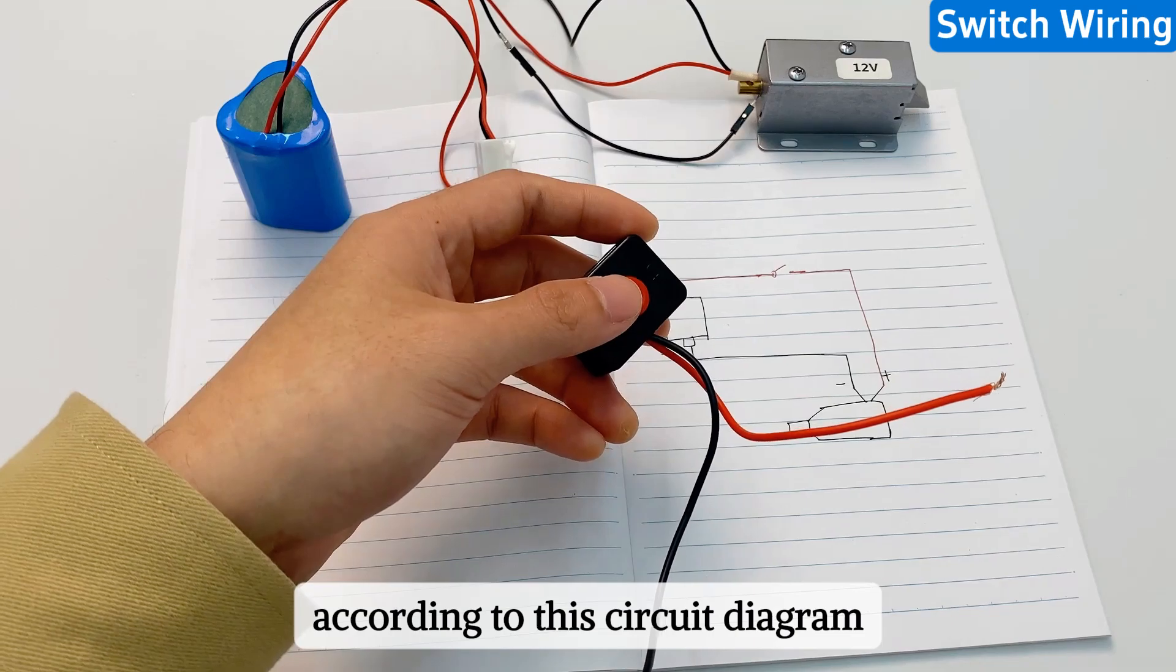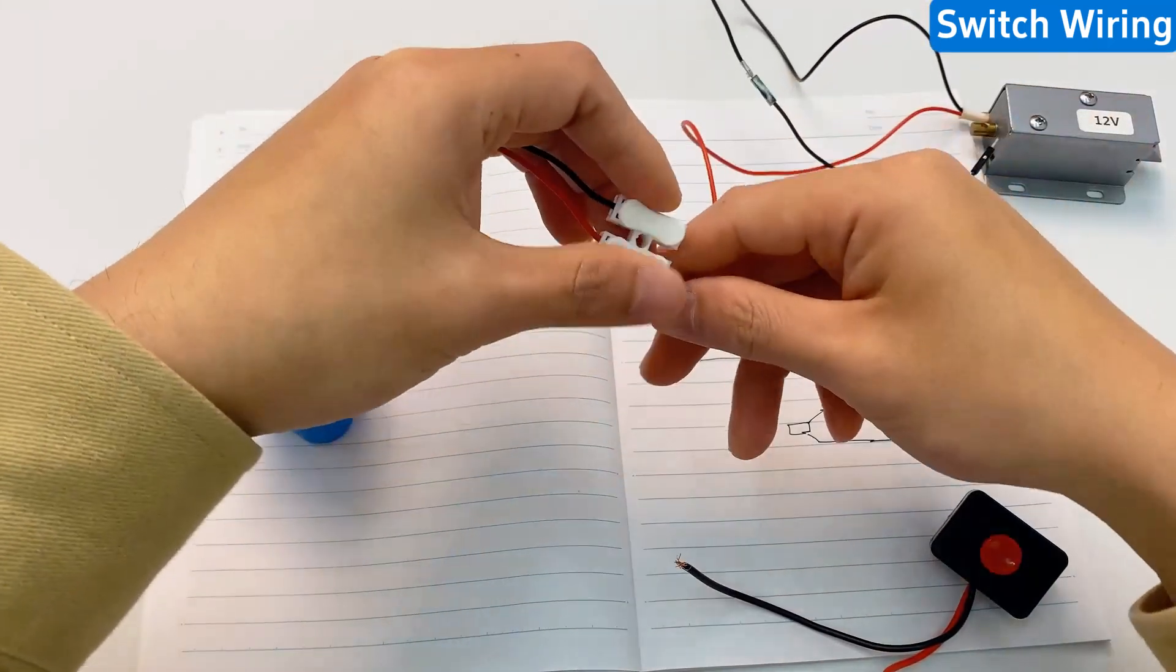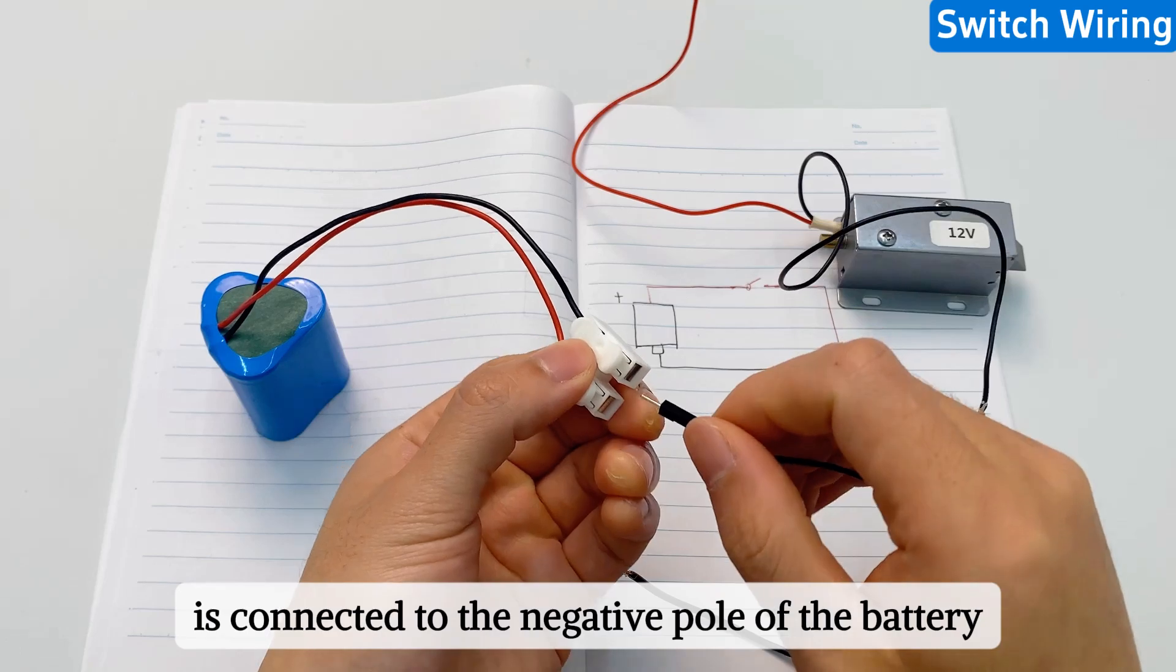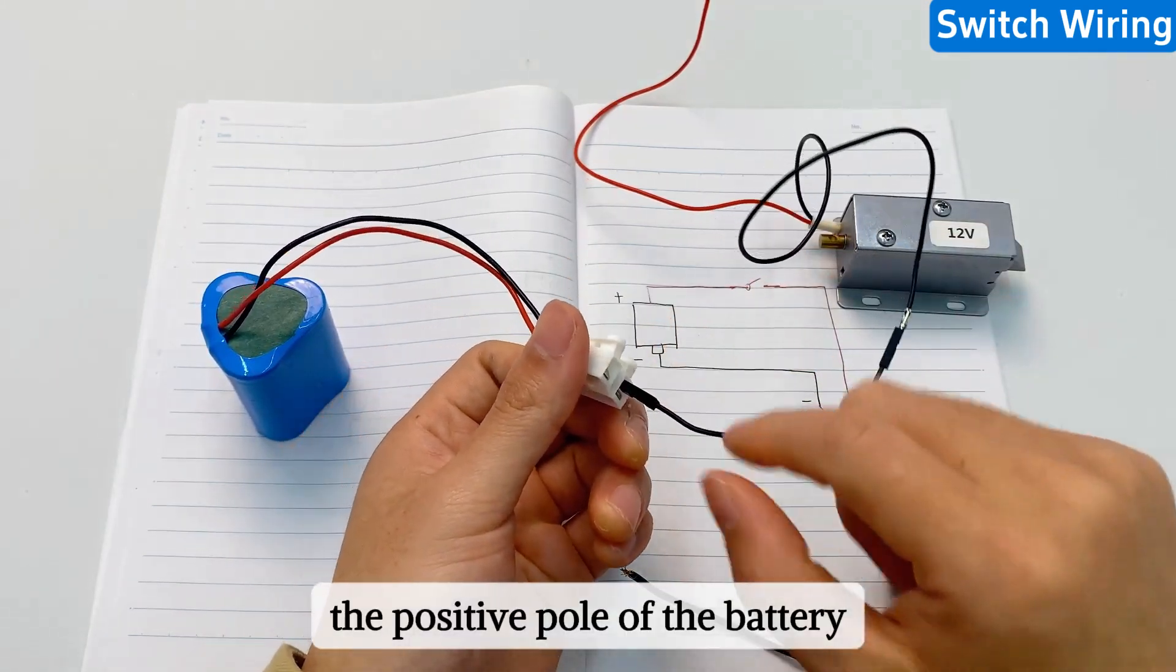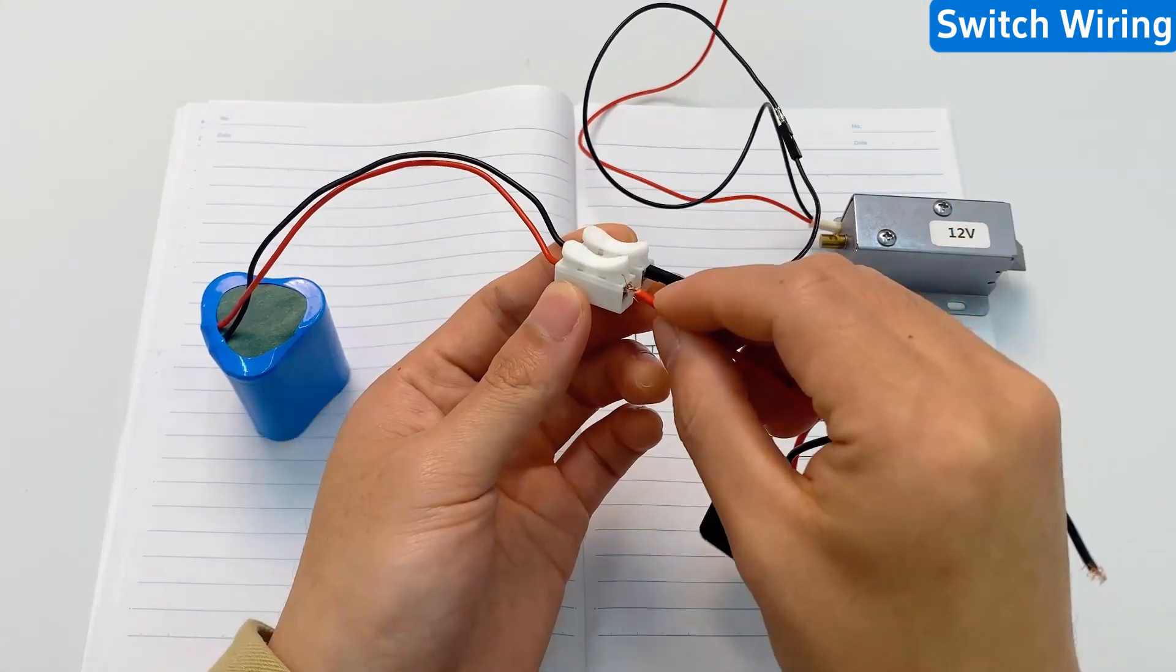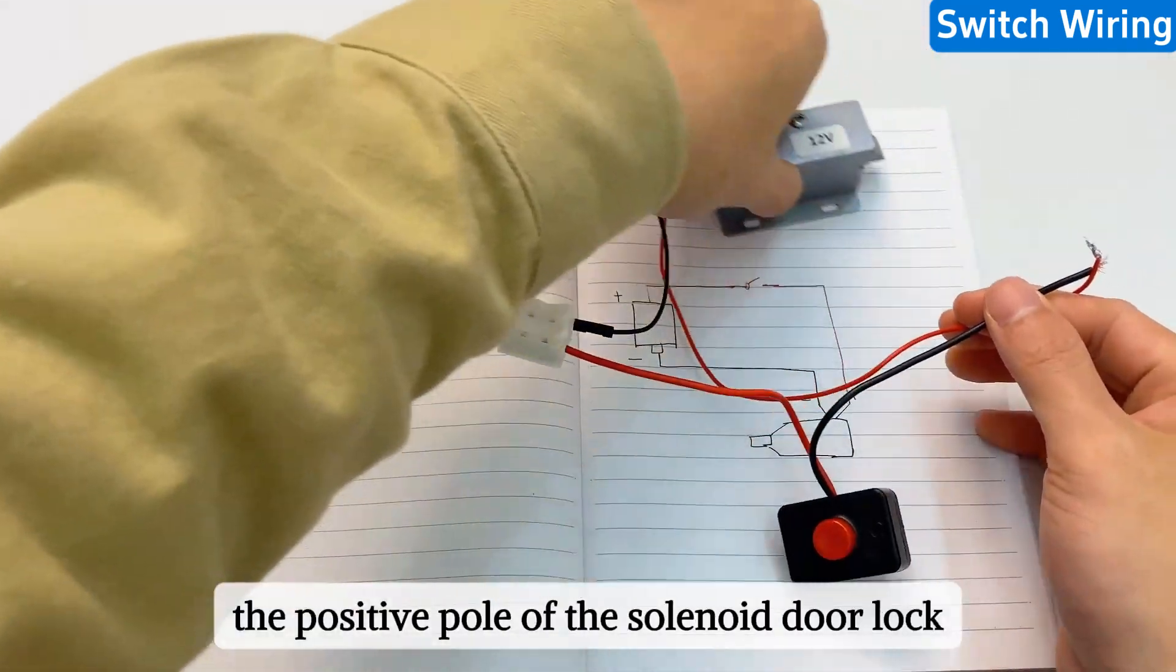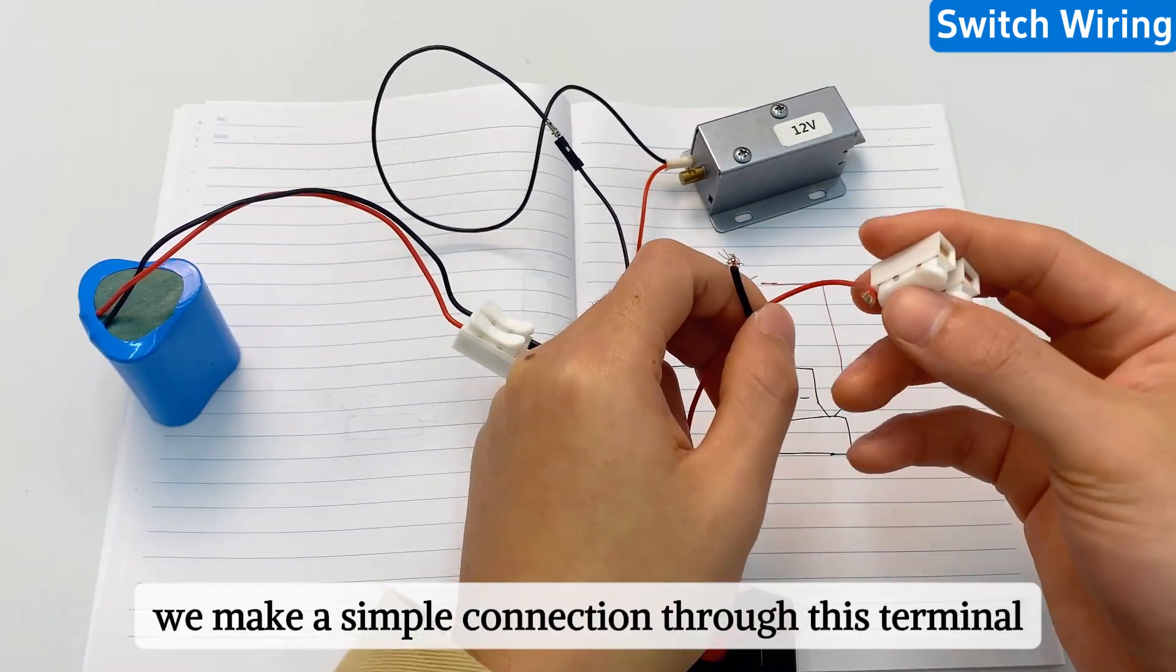According to this circuit diagram, let's connect it. The negative pole of the solenoid door lock is connected to the negative pole of the battery. The positive pole of the battery is connected to one end of the switch. The other end is connected to the positive pole of the solenoid door lock. We make a simple connection through this terminal.